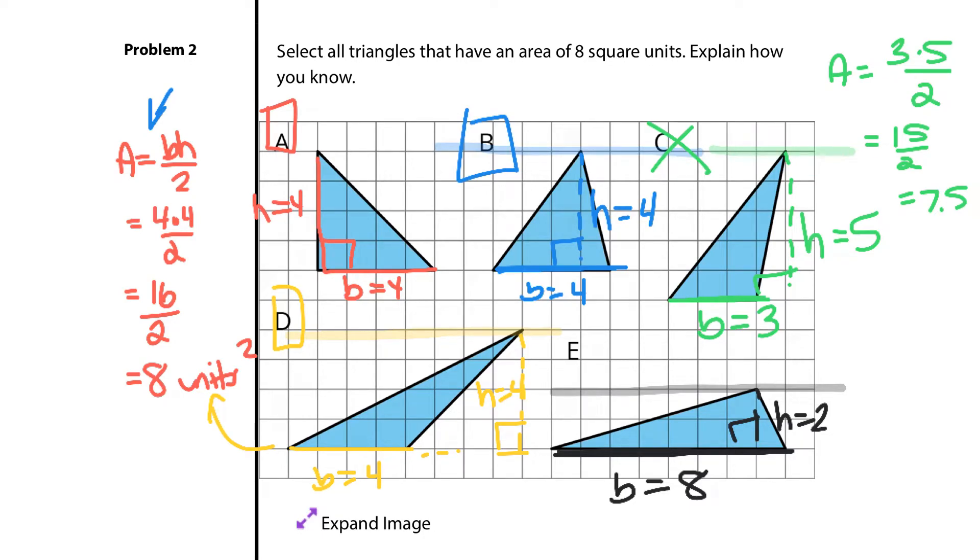Again, don't dismiss this just because it's not 4 and 4, it still could have an area of 8. And so when I take base, 8 times height, 2, and divide it by 2. My area is 16 divided by 2, which looks very familiar because, once again, it produces 8 square units for my area.